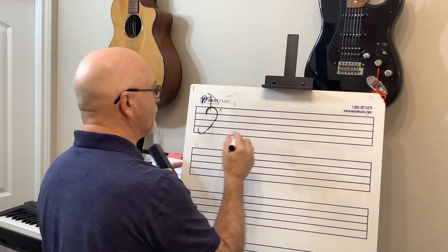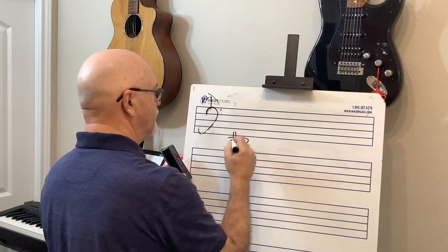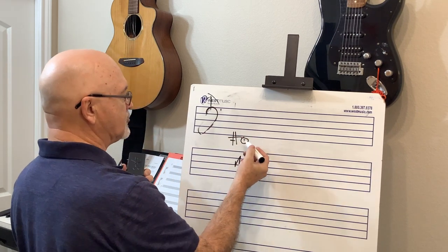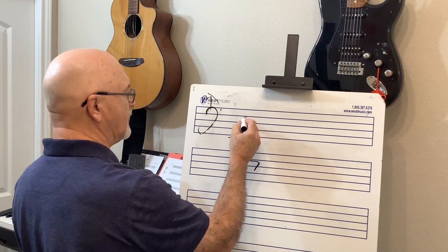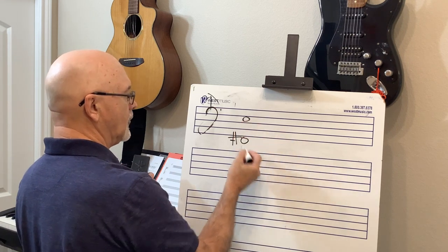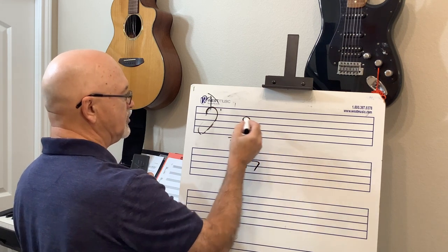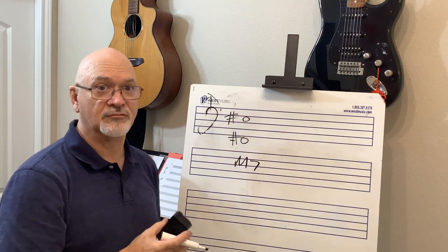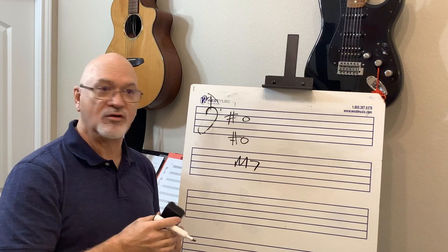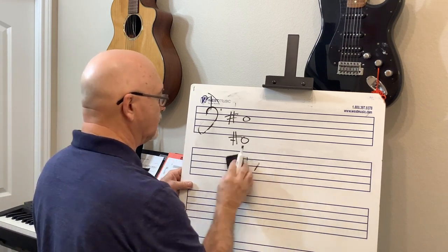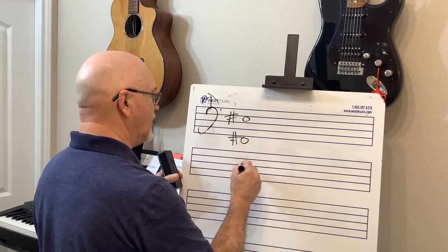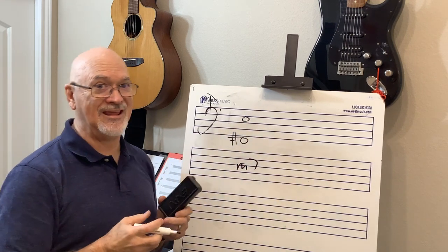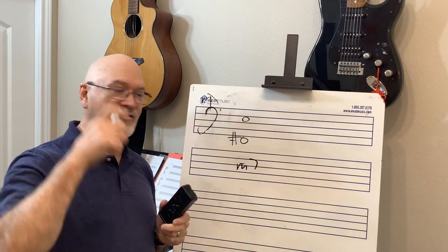Key of F-sharp: a major seventh is E-sharp — that's the leading tone. F-sharp, C-sharp, G-sharp, D-sharp, A-sharp, E-sharp. But if I want a minor seventh, I lower it a half step: F-sharp to E-natural. That's the minor seventh.